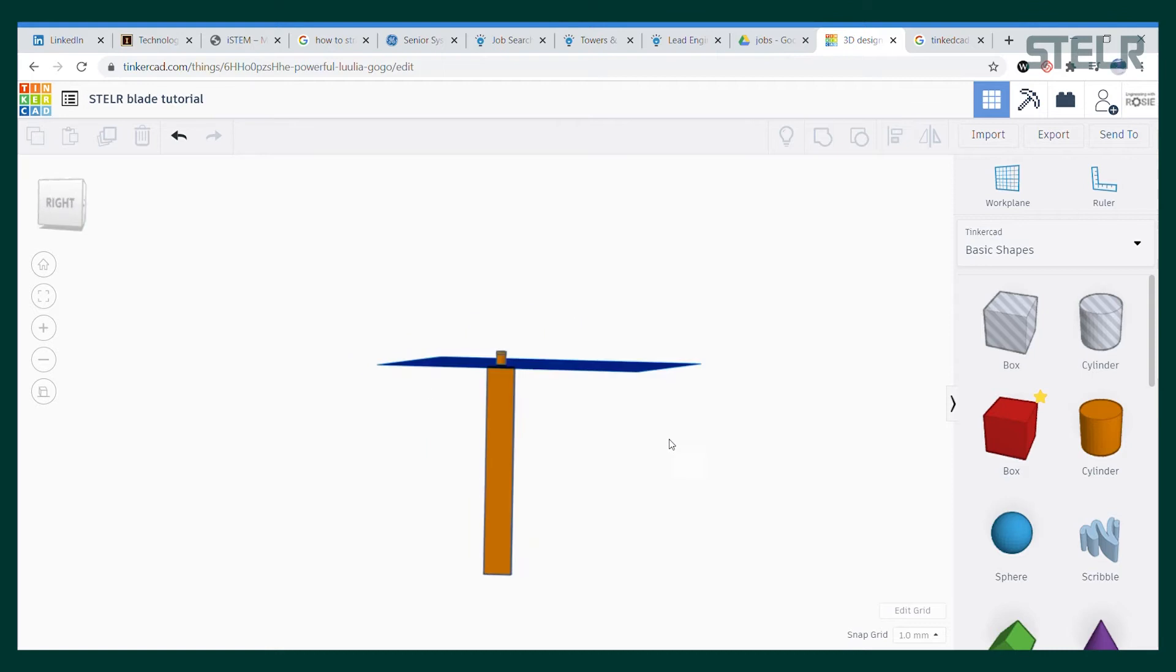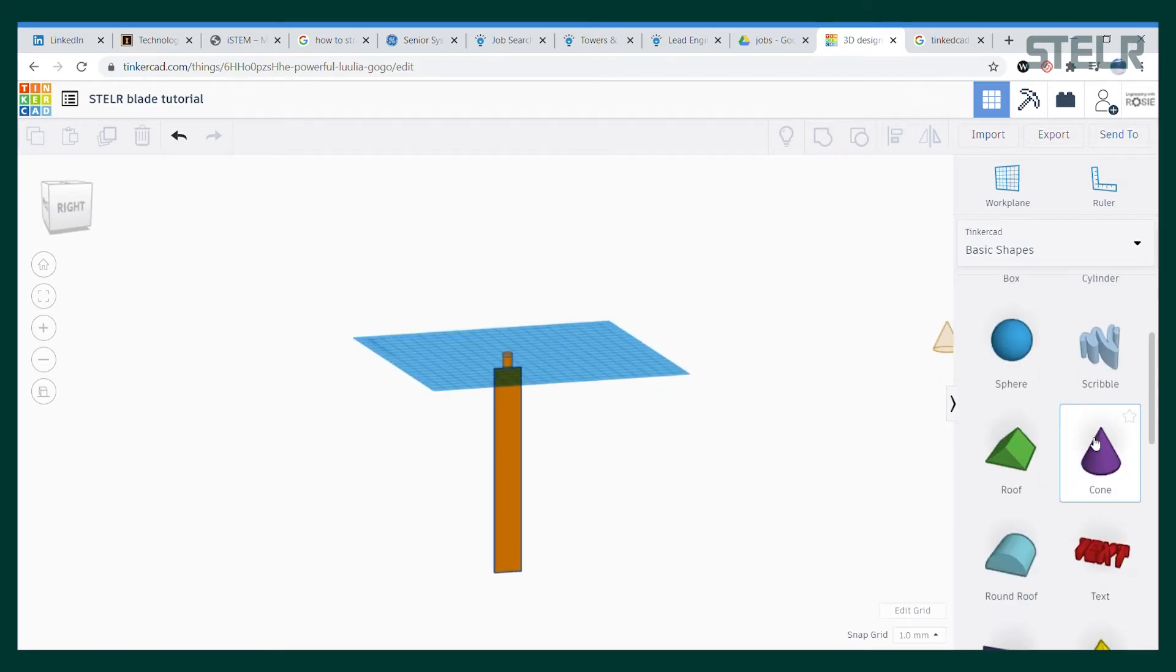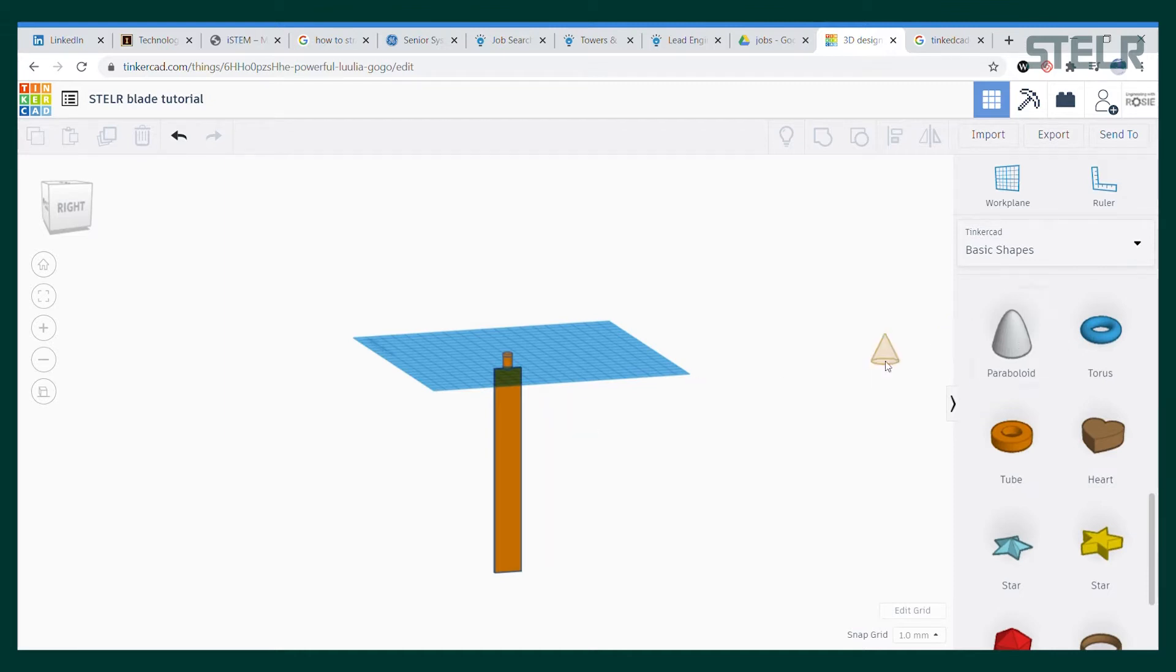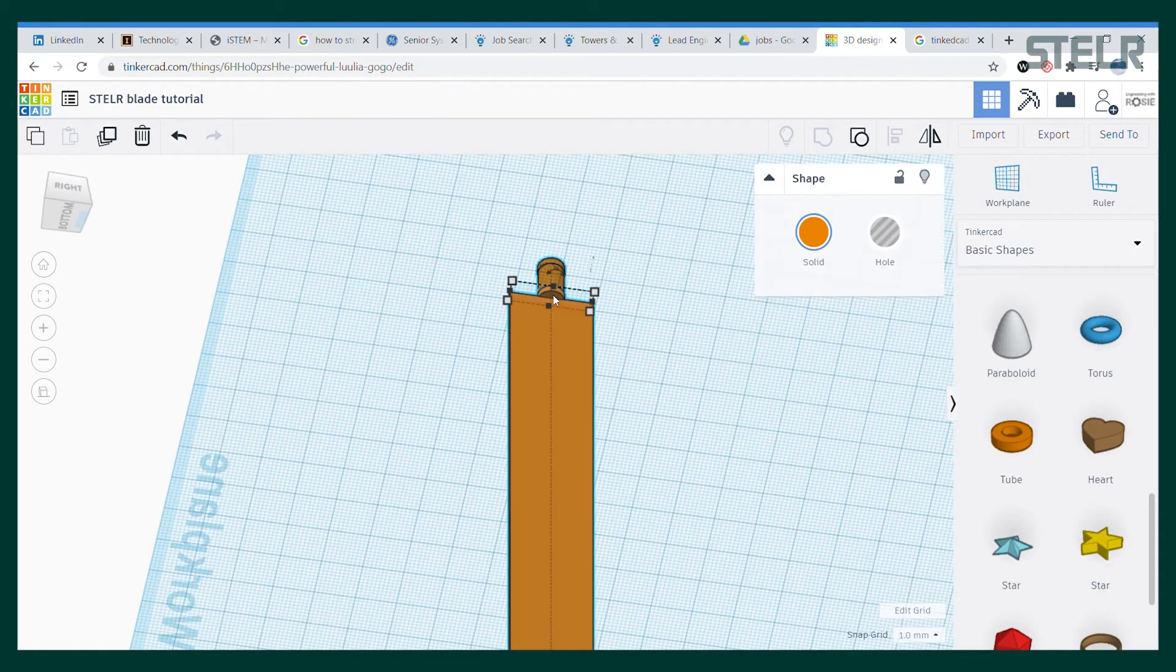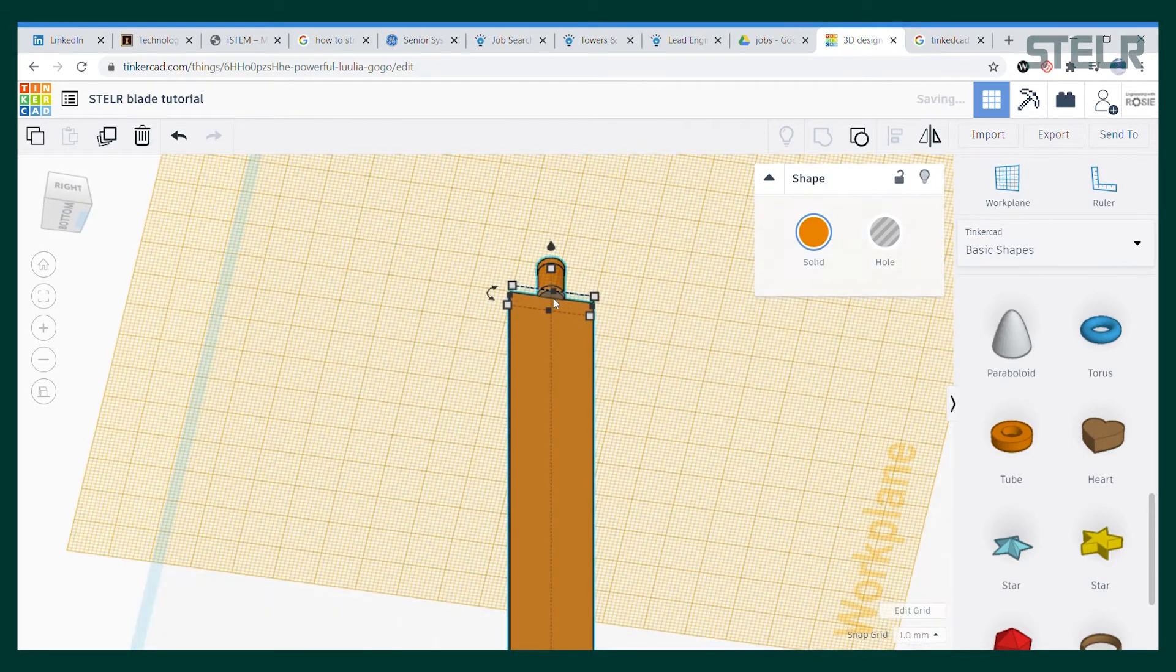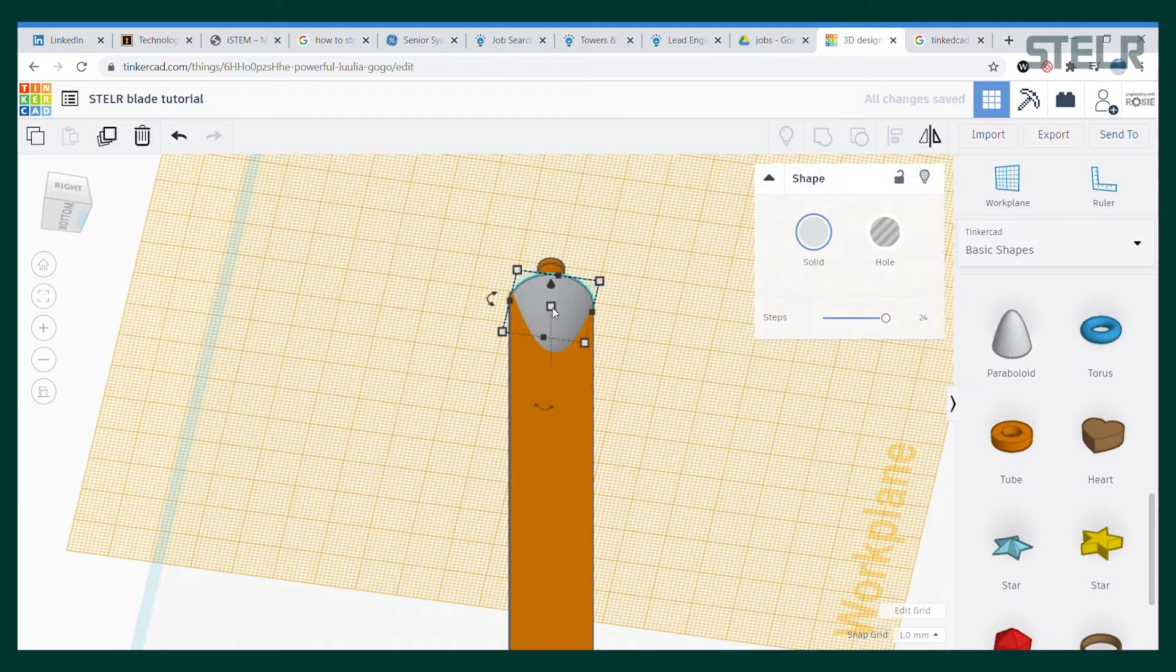There are a couple of shapes that we could use in the basic shapes library. There is a cone but I don't like it so much because it has a really pointy end. I think I like the look of the paraboloid better with its slightly rounded end. So I will make a work plane on the bottom surface of the cylinder part and then drag on the paraboloid.